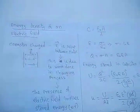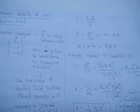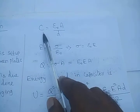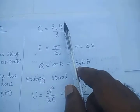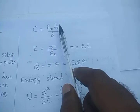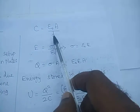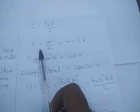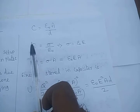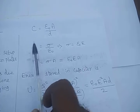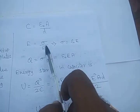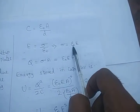Now we are going to derive an expression for the energy density of an electric field. We already know that in a parallel plate capacitor, the capacitance value is equal to ε₀A/d, where ε₀ is the permittivity of free space, A is the area of the plate, and d is the distance between the parallel plates. For parallel plates, the electric field is equal to σ/ε₀, where σ is the surface charge density.